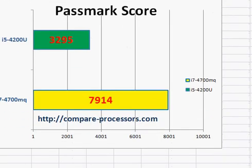In terms of PassMark score, as expected, the MQ delivers more than twice the performance of the i5-4200U.